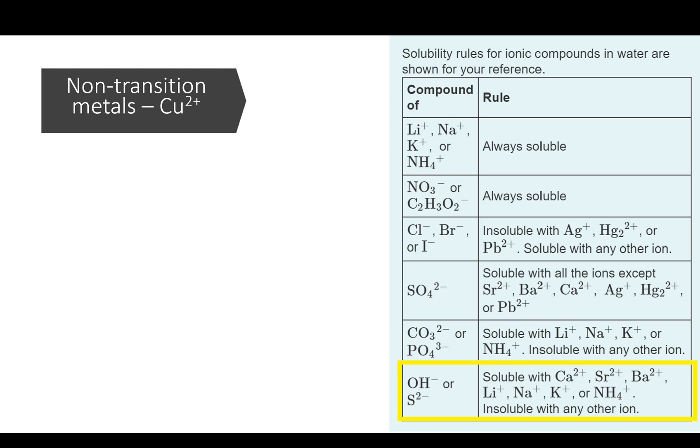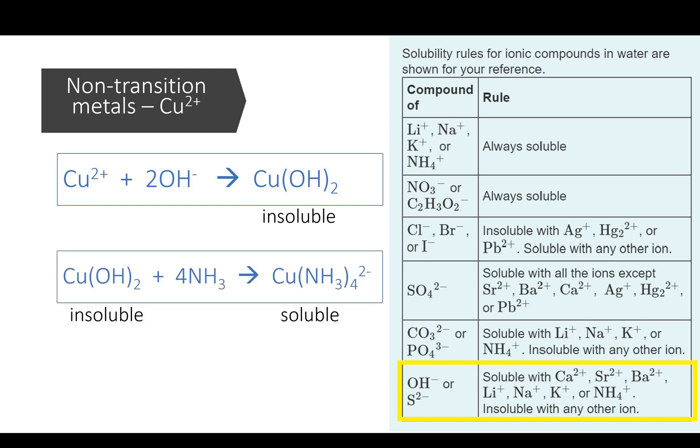Again, the solubility rule says that copper-2 hydroxide is insoluble. When ammonia is added to copper-2 solution, the insoluble copper hydroxide is produced. Just in case you are wondering where the hydroxide ion is from, ammonia is a weak base. It reacts with water, and they partially dissociate into ammonium and hydroxide ion. Now copper-2 hydroxide can react with excess ammonia to produce a soluble complex ion, which is deep blue in color.